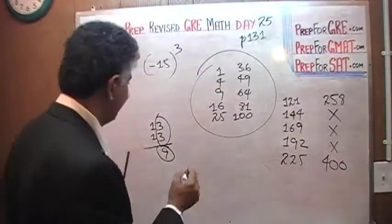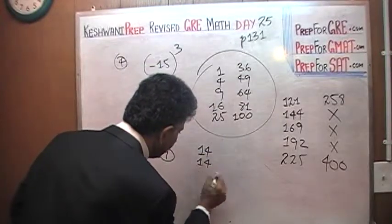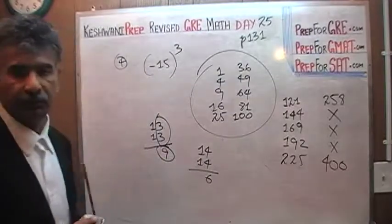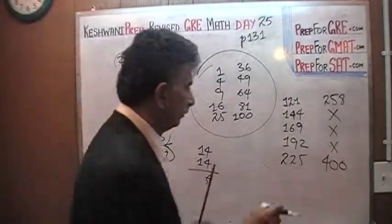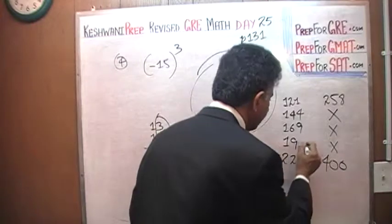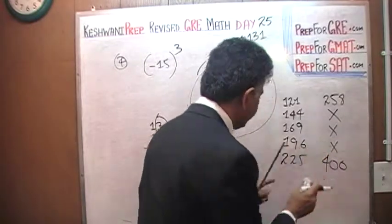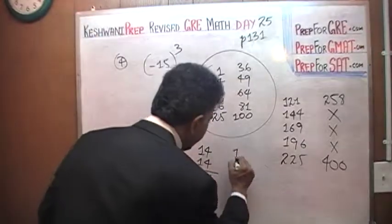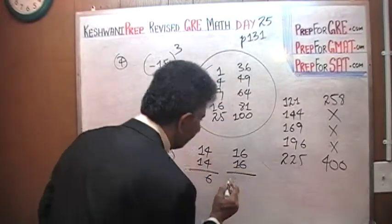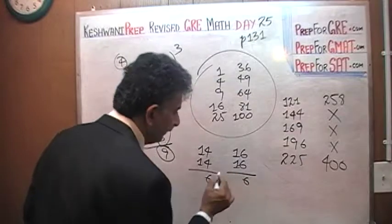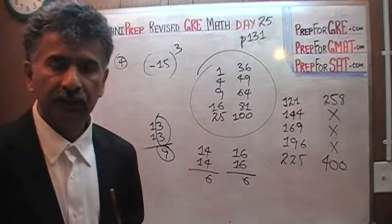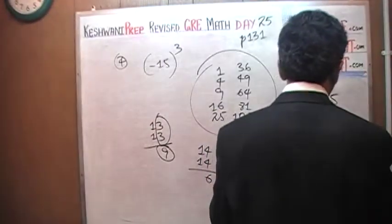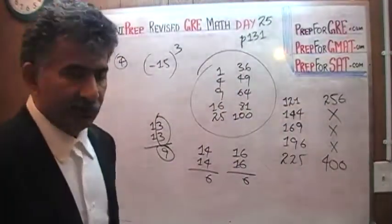Same logic applies: 14 squared — 4 times 4 is 16 — so it must end in a 6. 14 squared cannot end in a 2. 15 squared is 225. 16 squared — 6 times 6 is 36 — must end in a 6, so it cannot be 258.